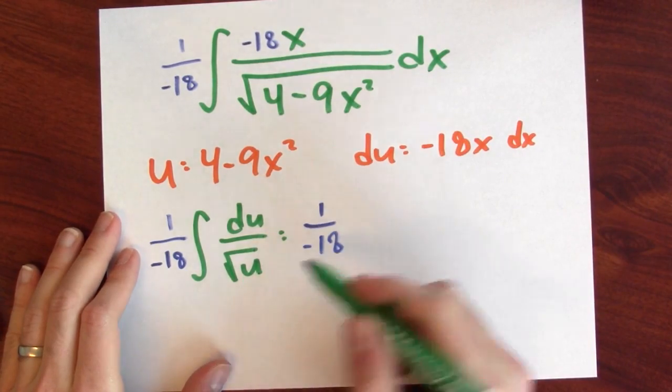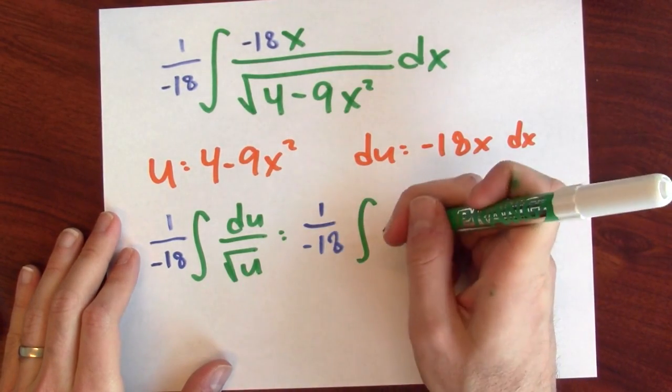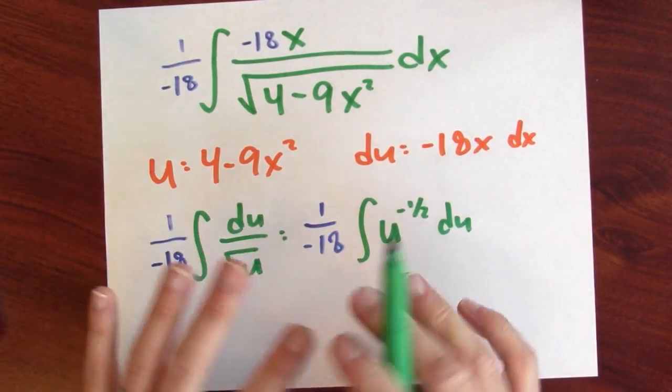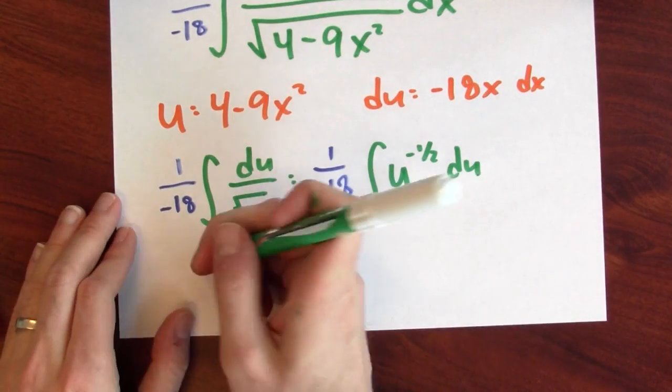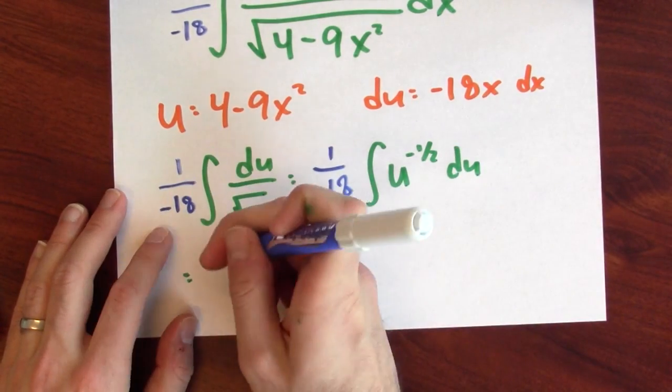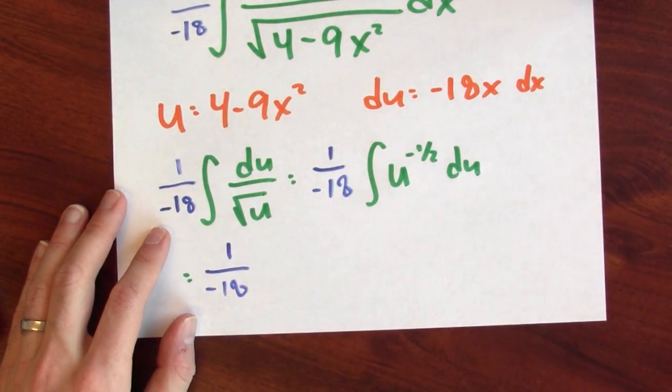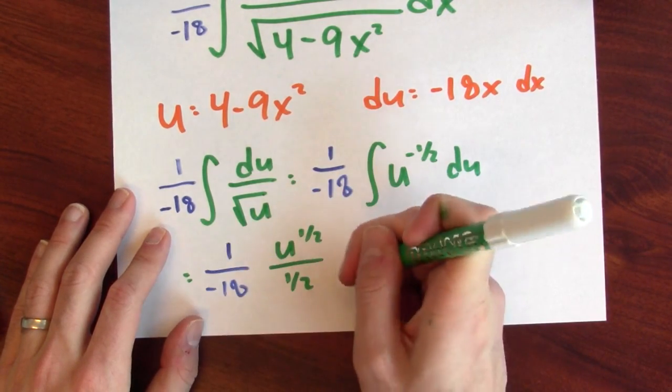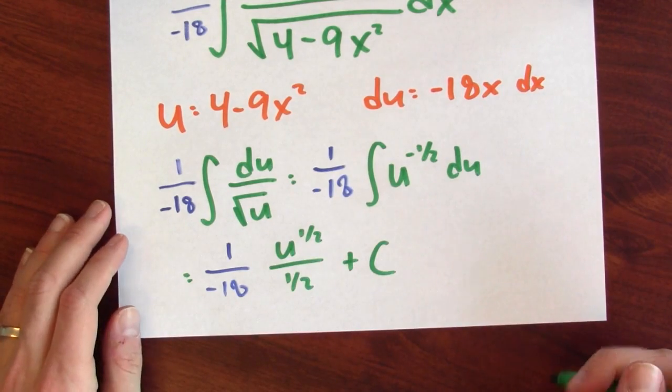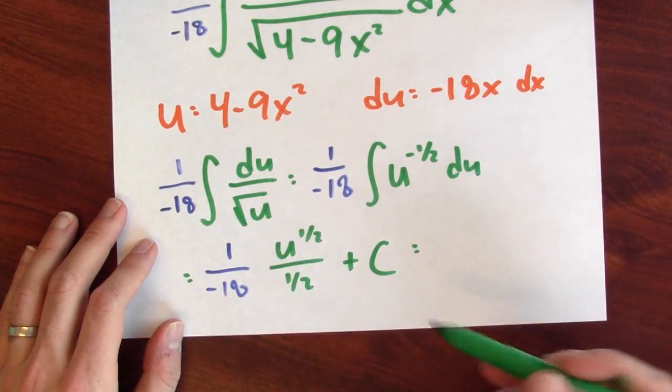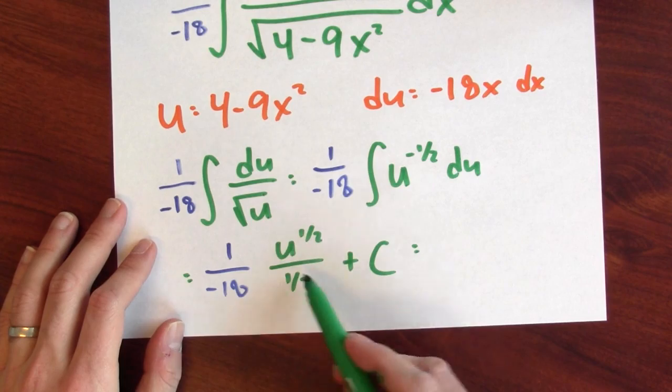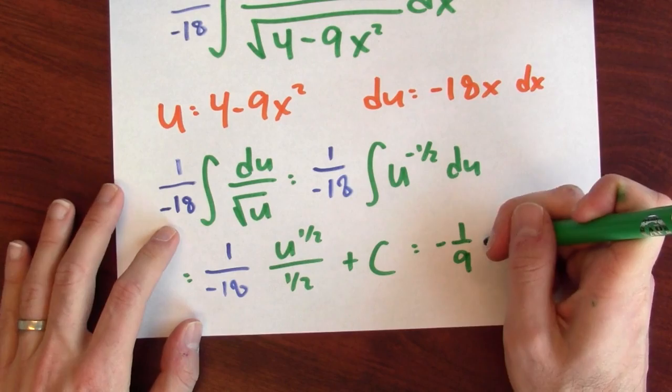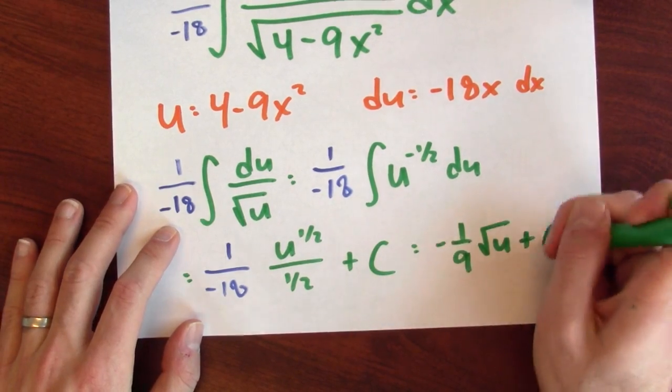So this is still 1 over negative 18. And what's an anti-derivative of this? Well, this is the anti-derivative of u to the negative 1 half power. But that is exactly the sort of thing I can do with the power rule. So this is 1 over negative 18 times, by the power rule, this is u to the 1 half over 1 half plus c, which I could rewrite a little bit more nicely. Dividing by 1 half is the same as multiplying by 2. So this is negative 1 ninth the square root of u plus c.